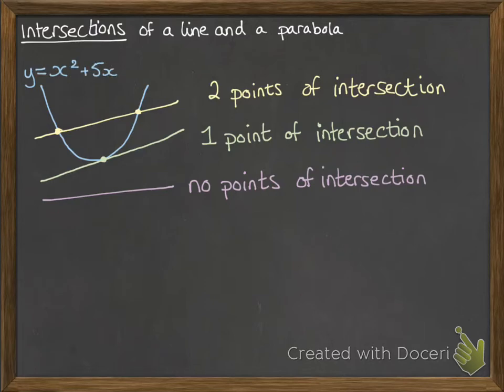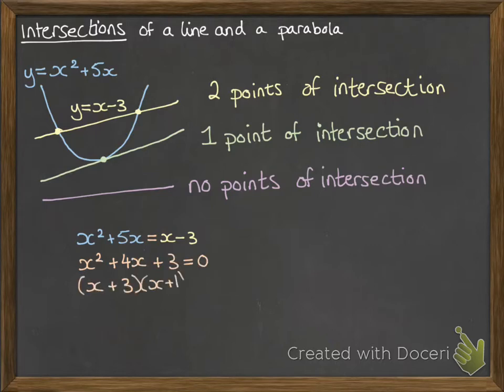So say this was, for example, the parabola x squared plus 5x, and we had the line y equals x minus 3, and we want to find those two points of intersection. We would have to put those equations equal to each other and solve it. You've done this before. So solving that equation would give us the x-coordinates of minus 3 and minus 1.